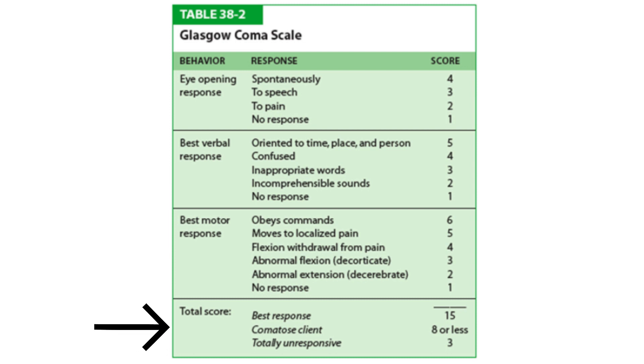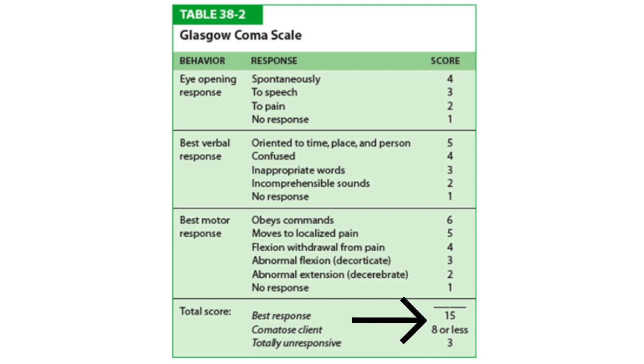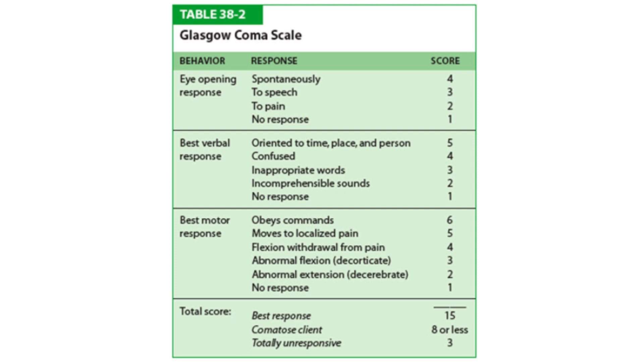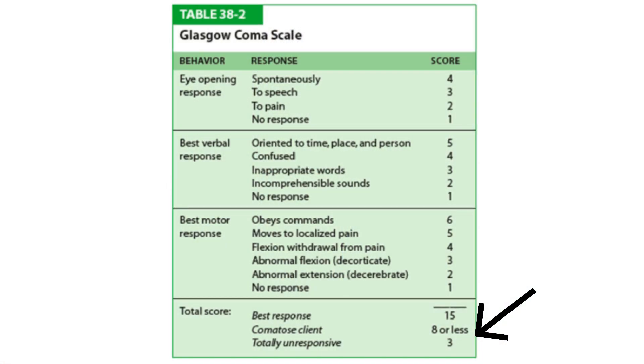At the very bottom you see the total score. If a patient has a total score of 15, that is the best response they could have — a GCS of 15. You will hear this frequently used in the emergency room. We always had a saying: eight, you intubate. So if the patient was eight or less, you intubate that person. On this table, comatose is eight or less, and totally unresponsive is three.